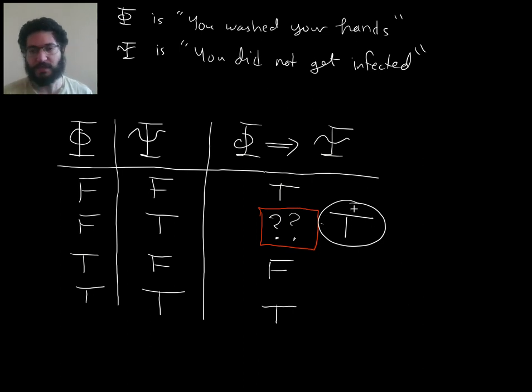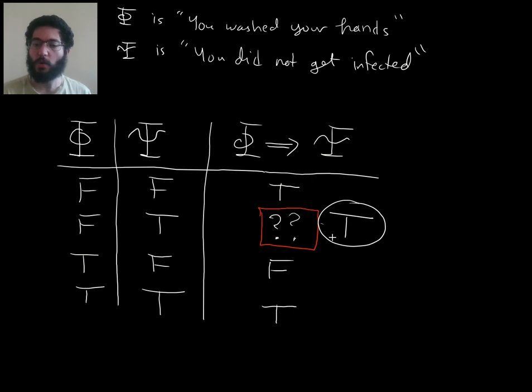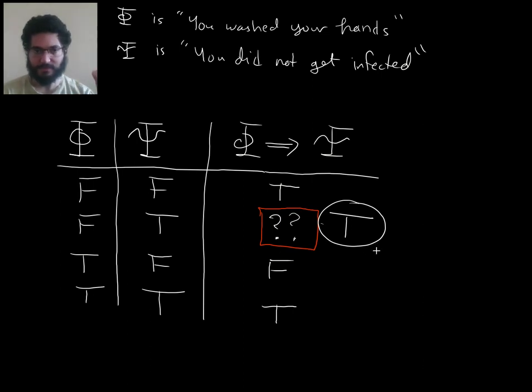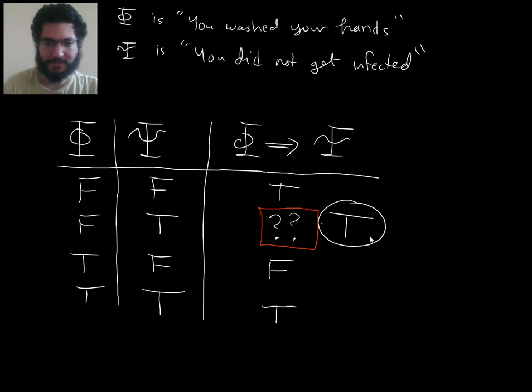We had to make a choice, and I want to convince you this is not just an arbitrary choice. In fact, with the rules we have so far, the only thing that can go here is true — you cannot put anything else and be consistent with the rules laid out so far. So first I want to take a detour and review how proof by contradiction works, and then we'll come back to why this should be true.